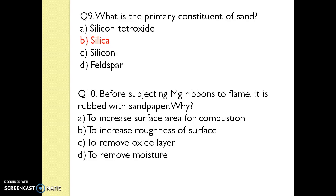Before subjecting a magnesium ribbon to flame, it is rubbed with sandpaper. Why? The answer is to remove the oxide layer.